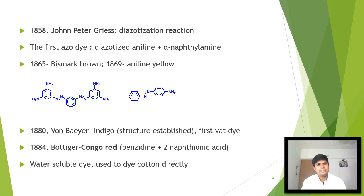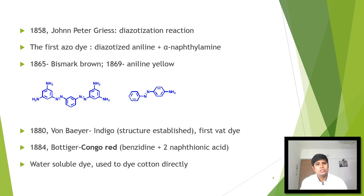In 1858, John Peter Griess discovered the diazotization reaction. The diazotization reaction involves preparing a diazonium salt from amines, and then coupling that diazonium salt with a coupler such as phenol or another amine. This was one of the most important reactions in the dye stuff industry. Griess prepared the first azo dye from diazotized aniline and alpha-naphthylamine.